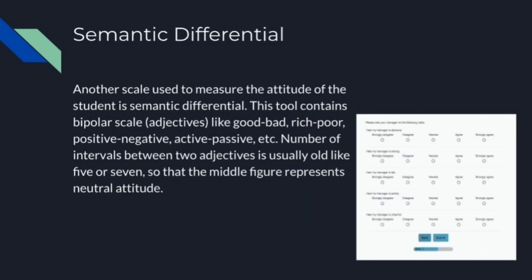Another scale used to measure the attitude of the student is Semantic Differential. This tool contains bipolar scales like good-bad, rich-poor, negative-positive, active-passive, etc. The number of intervals between two adjectives is usually odd, like 5 or 7, so that the middle figure represents a neutral attitude.